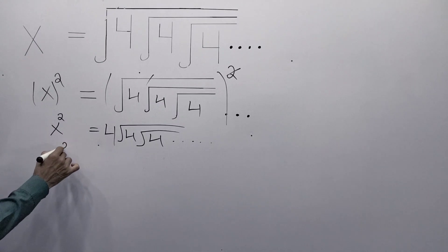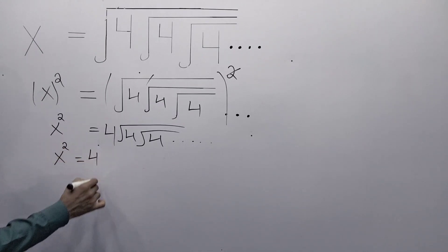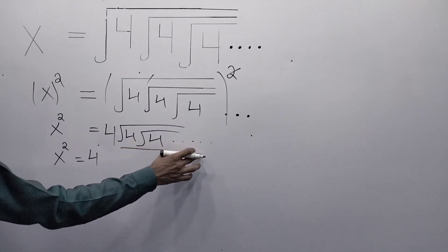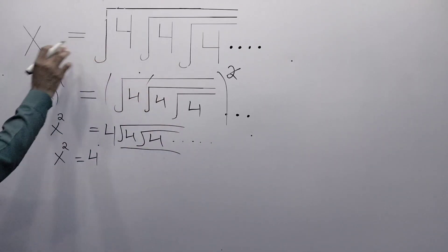As x squared equals 4 times... it is given that square root of 4, and again square root of 4, and so on. This continuous expression is given to equal x.